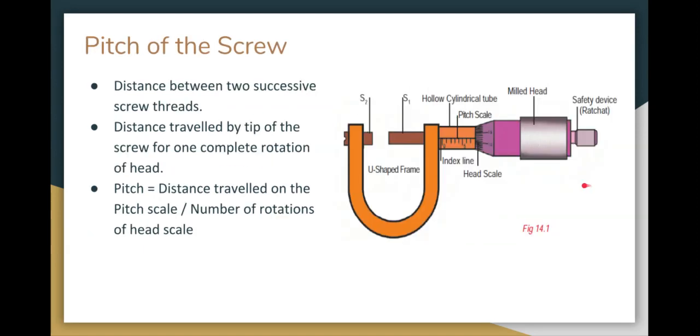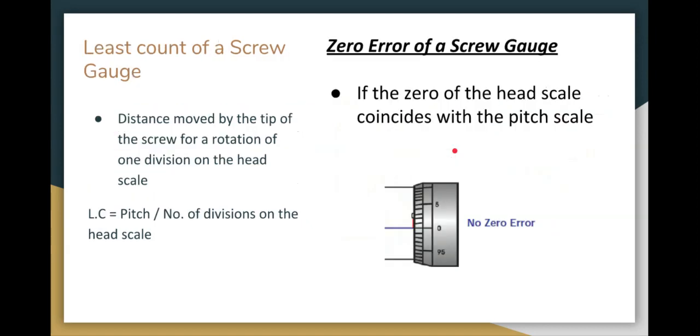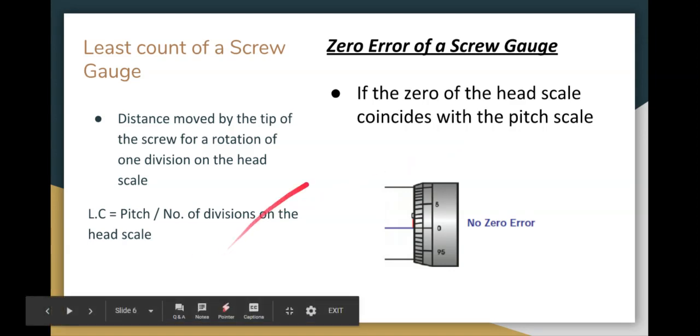So in the head scale, one rotation, one pitch will travel. This is the least count. Least count is equal to pitch divided by number of divisions on the head scale.